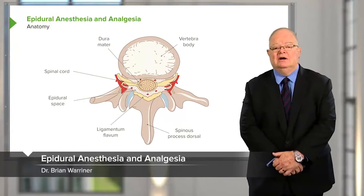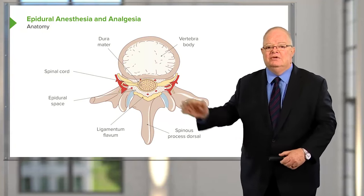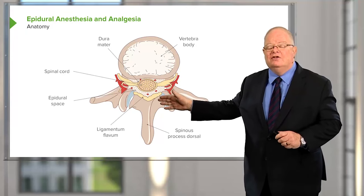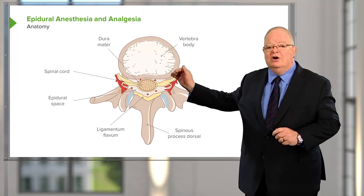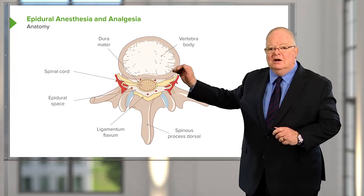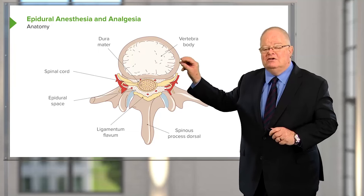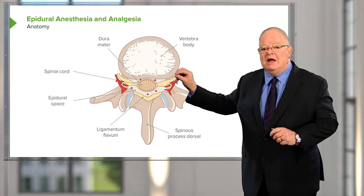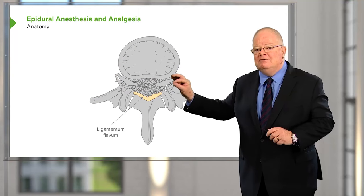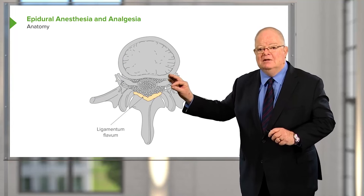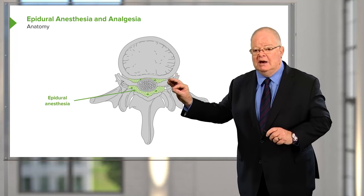This slide gives some idea of the anatomy of the spinal cord. On the lower portion you can see the dorsal spinous process of the vertebra. Going towards the body of the vertebra, you pass through a number of ligaments. Before you get to the spinal column, there's a thick ligament called the ligamentum flavum. The space between the ligamentum flavum and the coverings of the spinal cord is the epidural space — that's where we place epidural catheters and inject for epidural analgesia or anesthesia.